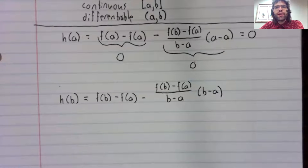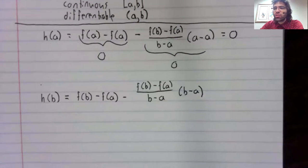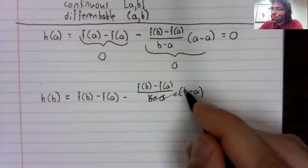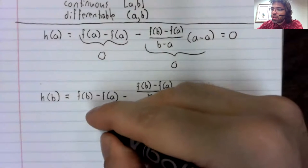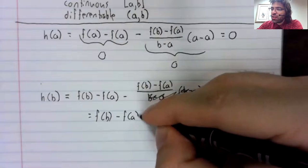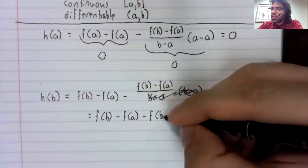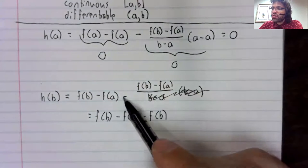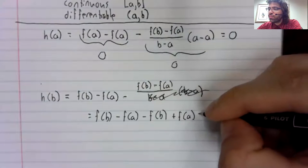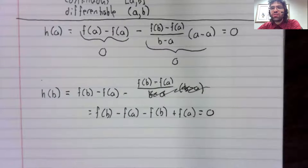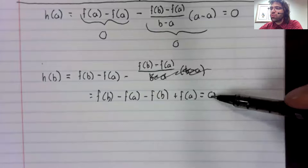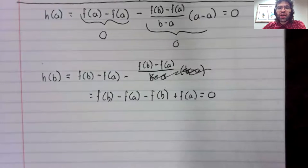What happens at the right endpoint? Well, this b minus a and this b minus a cancel, and we're left with f of b minus f of a. And this is zero. So our values at the endpoints are the same.